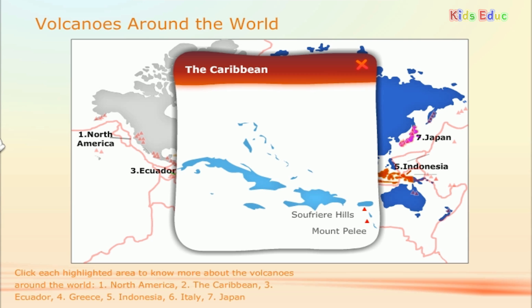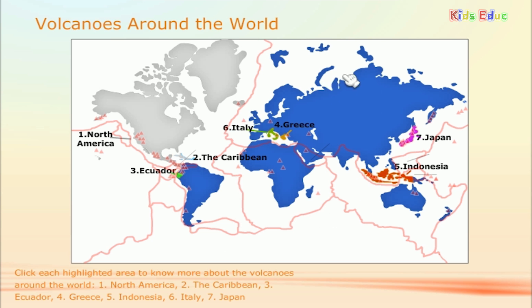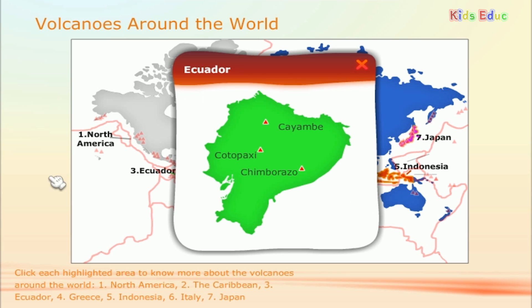The Caribbean: The important volcanoes found here are Soufriere Hills and Mount Pele. Ecuador: The important volcanoes found here are Cotopaxi, Cayambe, and Chimborazo.